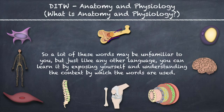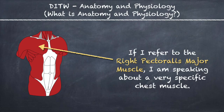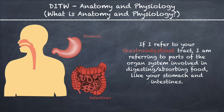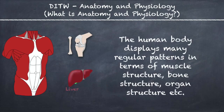A lot of these words may be unfamiliar to you, but just like any other language, you can learn it by exposing yourself and understanding the context in which the words are used. If I refer to the right pectoralis major muscle, I am speaking about a very specific chest muscle. If I refer to your gastrointestinal tract, I am referring to parts of the organ system involved in digesting and absorbing food, like your stomach and intestines.